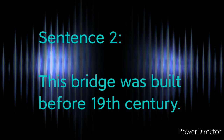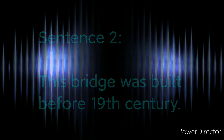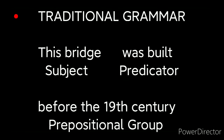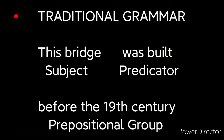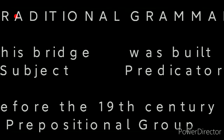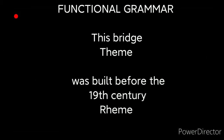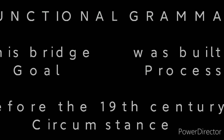Another example is the sentence 'this bridge was built before the 19th century.' In traditional grammar, 'this bridge' is the subject, 'was built' is the predicator, and 'before the 19th century' is the prepositional group. In functional grammar, 'this bridge' is the theme, and 'was built before the 19th century' is the rheme. Also under functional grammar, 'this bridge' is the goal, 'was built' is the process, and 'before the 19th century' is the circumstance.